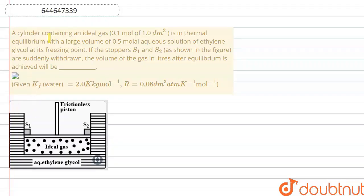Hello everyone, let's start the given question. The question says that a cylinder containing an ideal gas, 0.1 mole of one decimeter cube, is in thermal equilibrium with a large volume of 0.5 molar aqueous solution of ethylene glycol at its freezing point. If the stoppers S1 and S2 are suddenly withdrawn, the volume of the gas in liters after equilibrium is achieved will be...